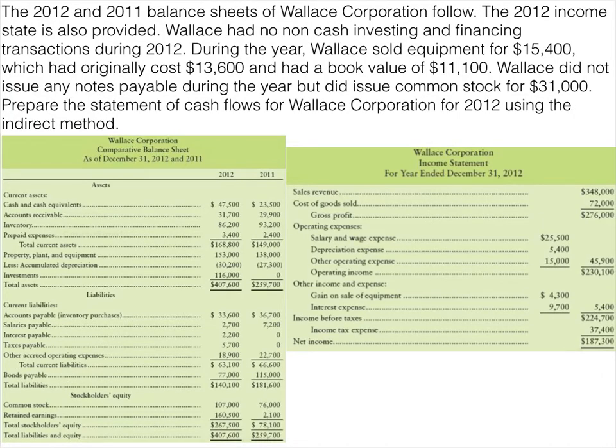All right, so here we're back to the main problem. You've got the balance sheet and income statement and a little bit of additional information. I would like for you to pause the video and try to complete a full statement of cash flows — the operating, investing, and financing sections, and any non-cash investing if that exists — and then come back and I will show you the answer.